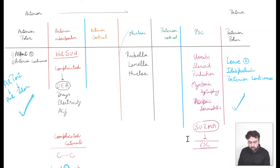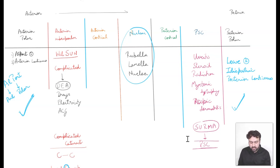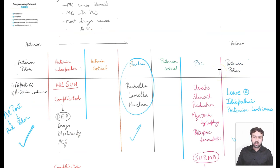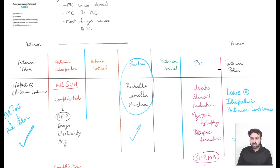For the nucleus, the classic one is rubella, which causes a pearly lamellar nuclear cataract — which is why we have the mnemonic Rubella, Lamellar, Nuclear. That's the only one you need to remember within the nucleus. For anterior subcapsular cataract, you have to remember two important ones: Wilson's disease — WILSUN causing sunflower cataract — and also chalcosis, both causing anterior subcapsular cataract.